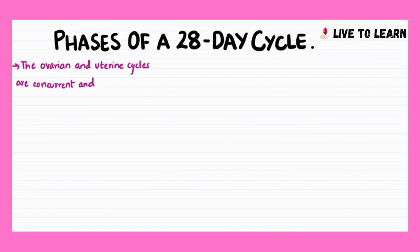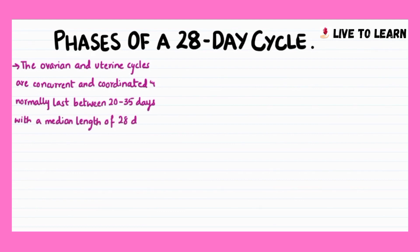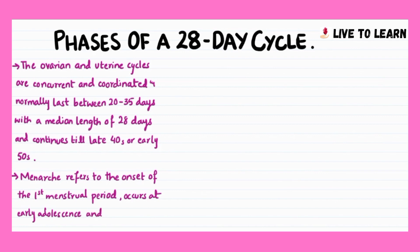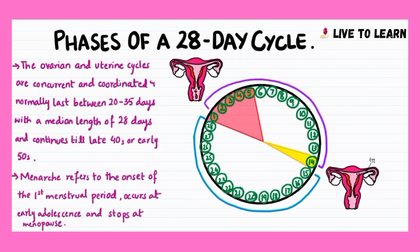The ovarian and uterine cycles are concurrent and coordinated, and normally last between 20 to 35 days with a median length of 28 days, and continues till late 40s or early 50s. Menarche refers to the onset of the first menstrual period, which occurs at early adolescence and stops at menopause. The first day of menstrual bleeding is considered the first day of the cycle, and menstruation lasts for about 5–7 days. Ovulation occurs around the 14th day of a 28-day cycle.